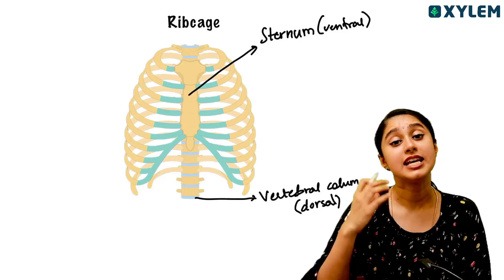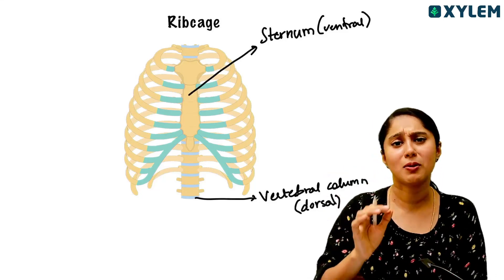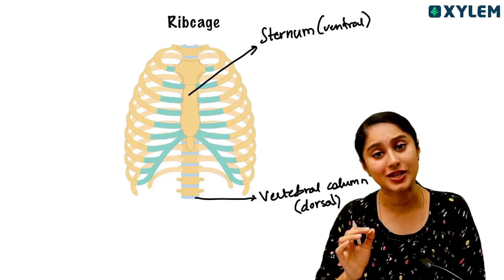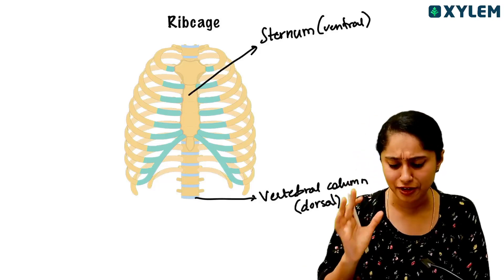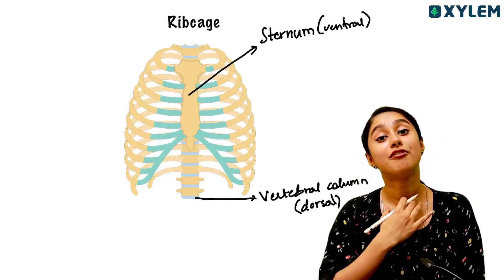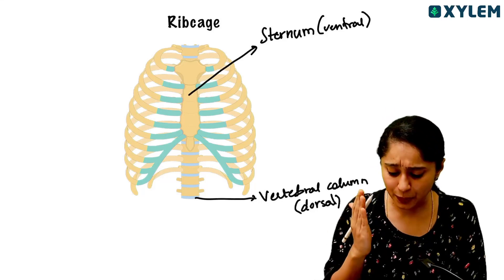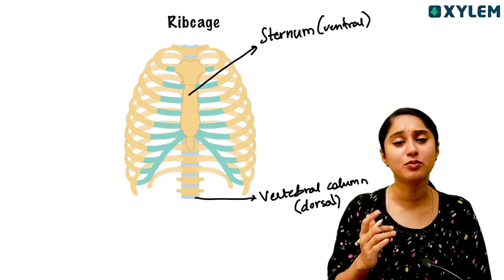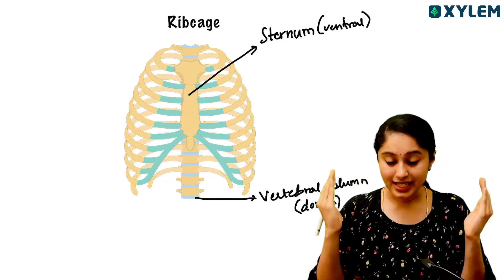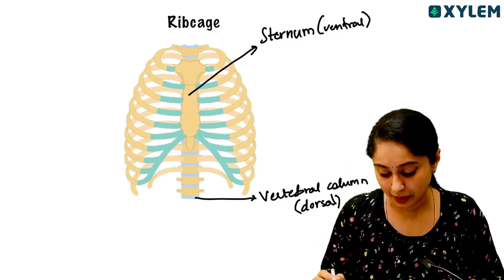The flat bone is the sternum. So if you have a match-the-following or a statement question about the sternum, sternum is the flat bone. Now, what is attached to the sternum? There are ribs.